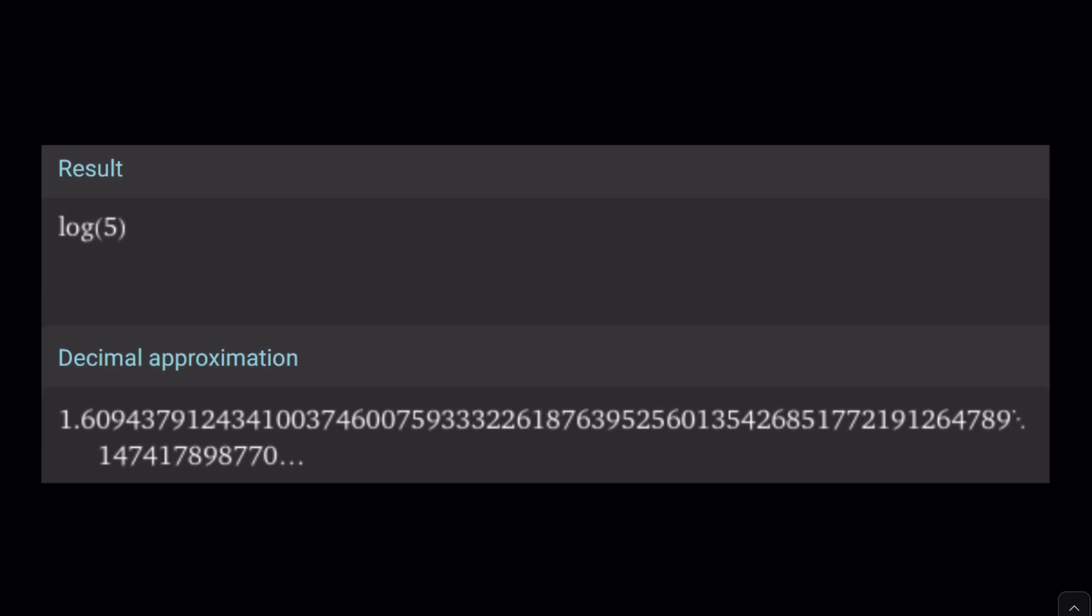So, Wolfram Alpha gives us, unfortunately, like I said earlier, it says log 5, but it means ln 5 for natural log. Unfortunately, Wolfram Alpha, bad job. And notice that the decimal approximation is about 1.6094379124341. You get the idea. And if you notice that this is actually pretty close to the golden ratio, right? Maybe in another video, we can compare those two numbers.